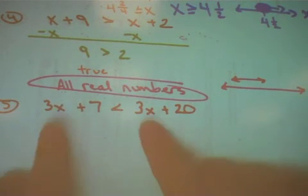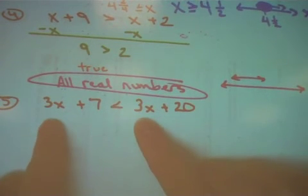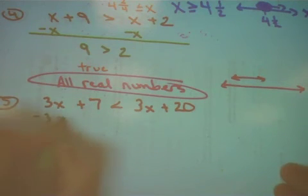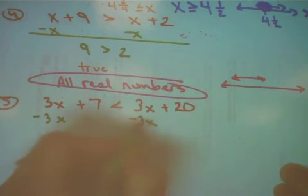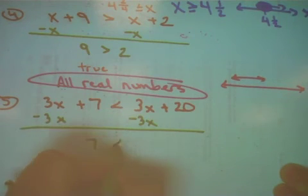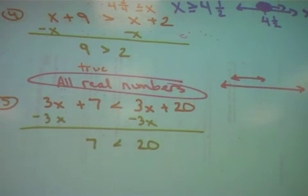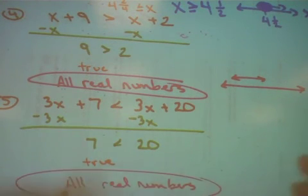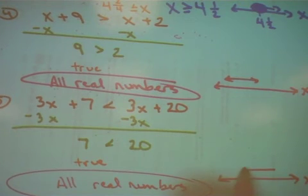Let's look at number 5. Now I have a 3x on both sides. Does it matter which one I move? No. But I move a positive by subtracting 3x. So 7 is less than 20. Is that true? Yes, it is. So what do we say? We say that all real numbers are the solution. Again, here's my number line with x and an arrow going both directions showing everything works.